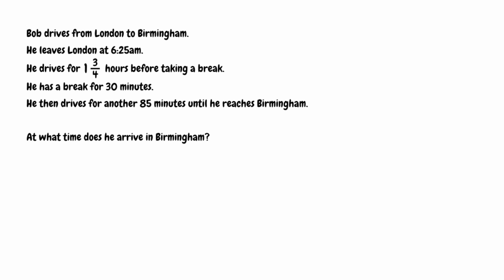What we're going to do is add all the times together and then add that onto the starting time. To make it easier, we'll find all these times in minutes and add them together, then convert back into hours and minutes. He drives for one and three quarter hours — one full hour is 60 minutes, and three quarters of an hour is 45 minutes — so 60 plus 45 gives us 105 minutes for the first part of the journey.